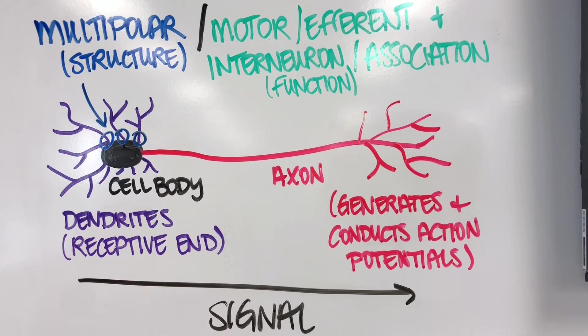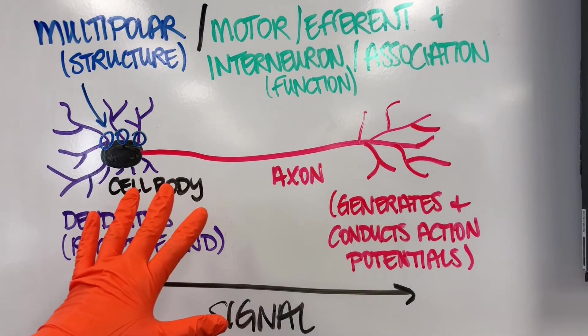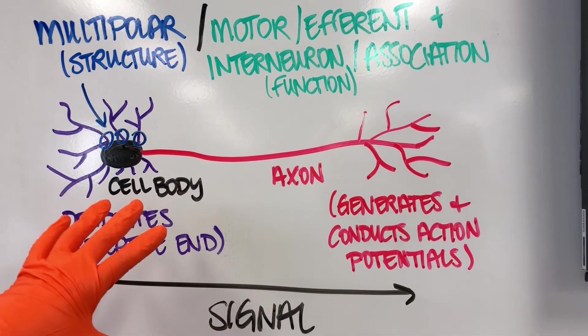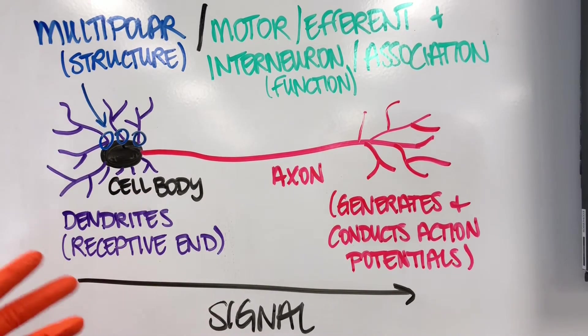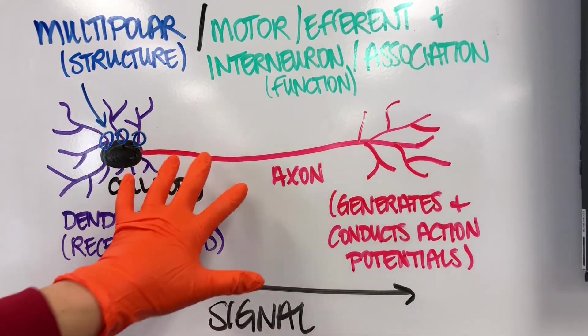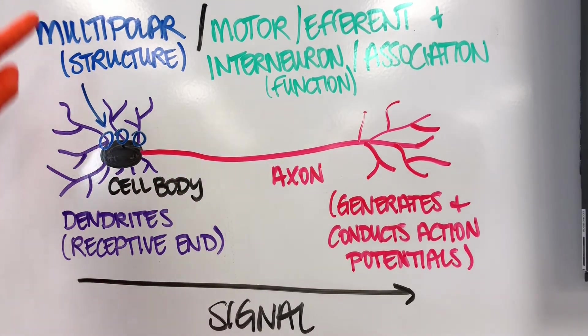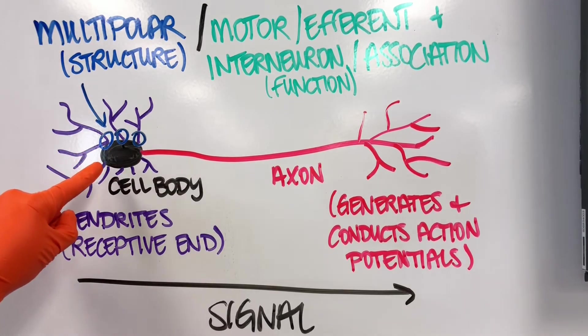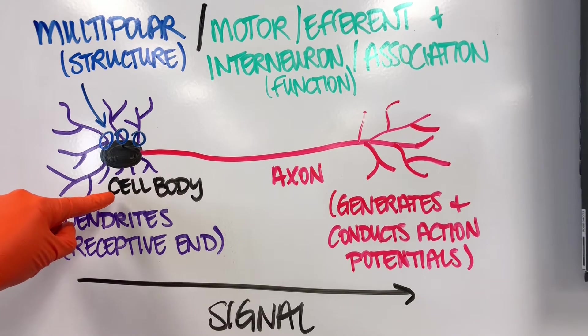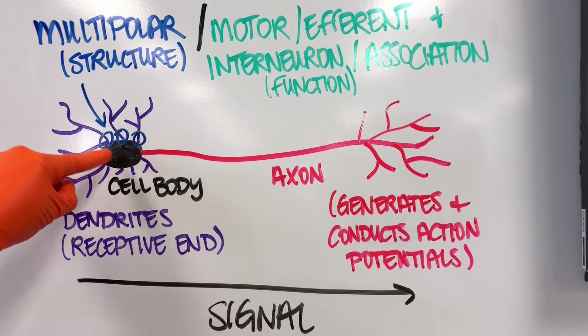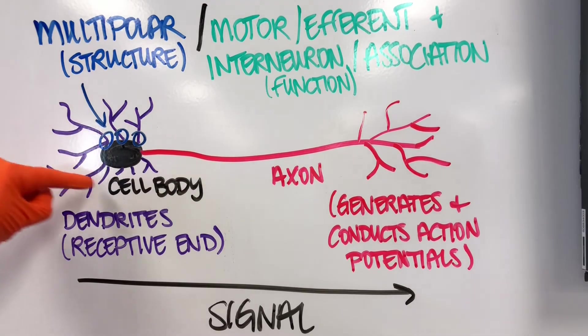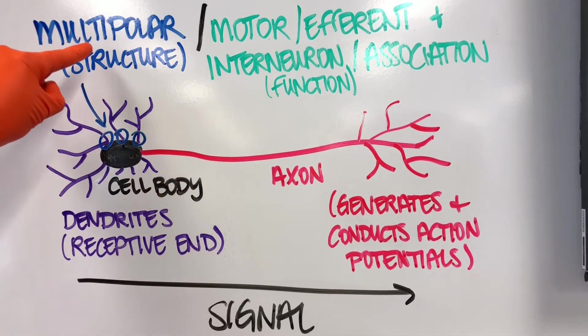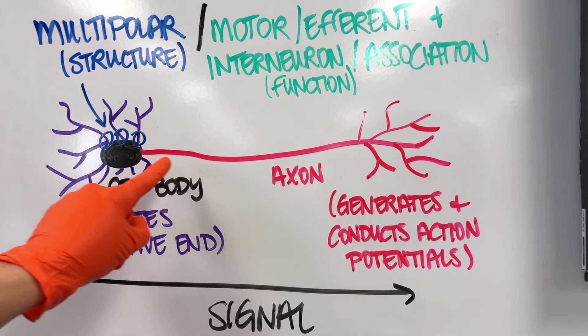We're going to contrast that with a multipolar neuron. Multipolar neurons are the most common neurons we have in the body. In fact, when you think of a neuron, you're probably thinking of something that resembles this shape. Multipolar—multiple poles—means we have multiple processes coming off of that cell body. You always want to start with the soma or cell body, see how many things are coming off of it, and that tells you the structural name.